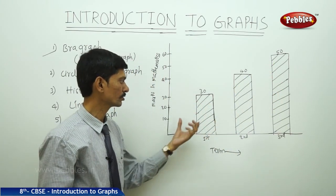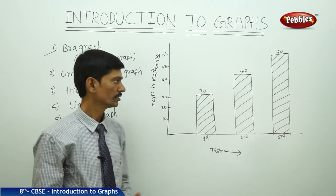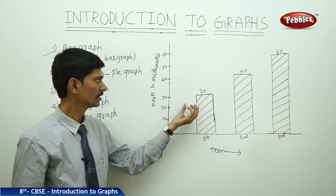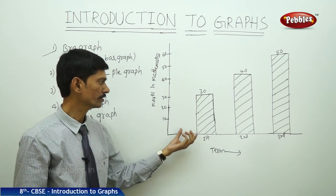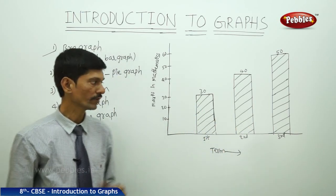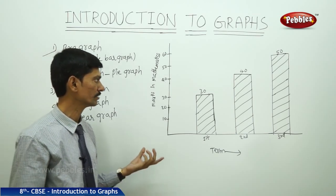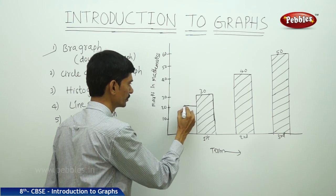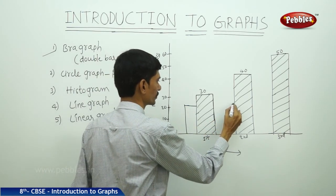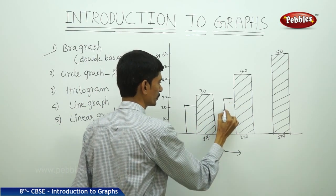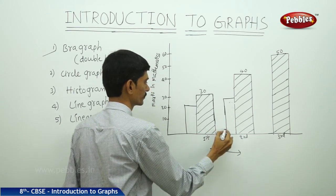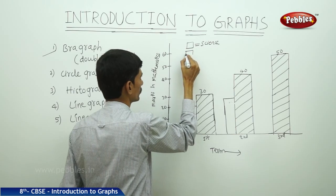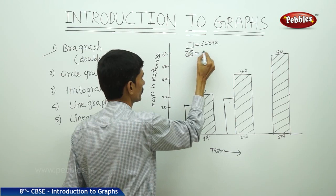These three vertical rectangles show the first term, second term, and third term examinations. We can compare whether the marks of the student are increasing or decreasing. We can easily say that the marks in mathematics are increasing from first term to second term to third term. If you want to show the comparison between two subjects like mathematics and science, we draw another graph. The unshaded rectangle represents science and the shaded rectangle represents mathematics.